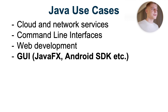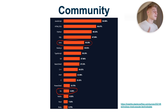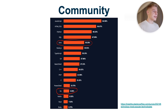Java use cases are quite similar to Go's, but additionally Java supports graphical user interfaces. With JavaFX and the Android SDK, you can easily create robust and fast applications. Regarding community, since Java was released in 1996 it has a larger community. But Golang is growing really fast and is used as the main language in companies such as Google, Uber, and Dropbox.